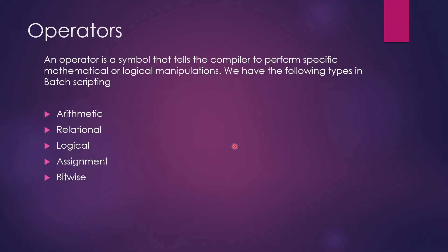Hi guys, welcome back to my channel LogicOps Lab. Today we're going to talk about operators. By definition, an operator is a symbol that tells the compiler to perform specific mathematical or logical manipulation. In batch scripting, we have five types of operators: arithmetic, relational, logical, assignment, and bitwise.